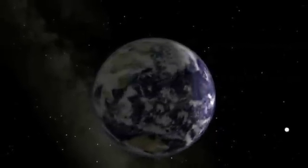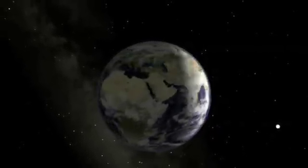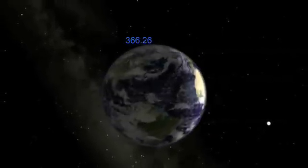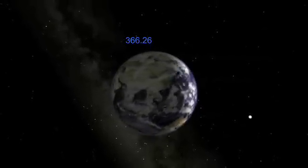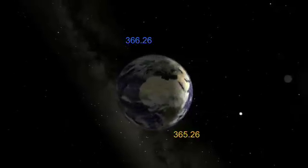Earth orbits the Sun once for about every 366.26 sidereal days and once for every 365.26 solar days.